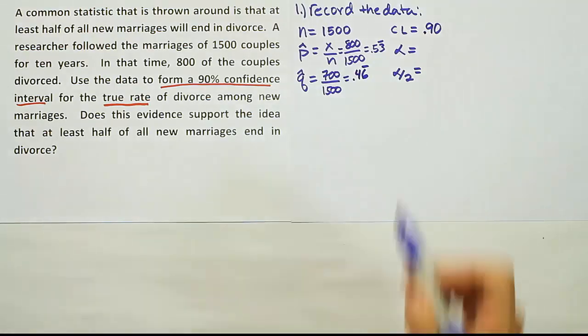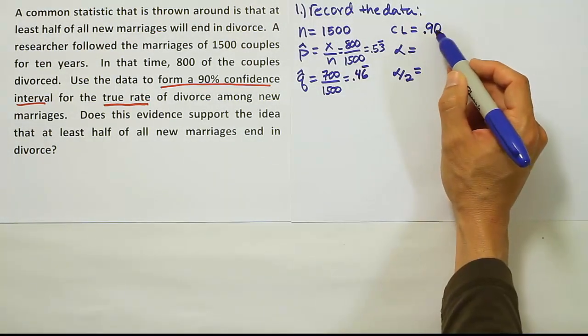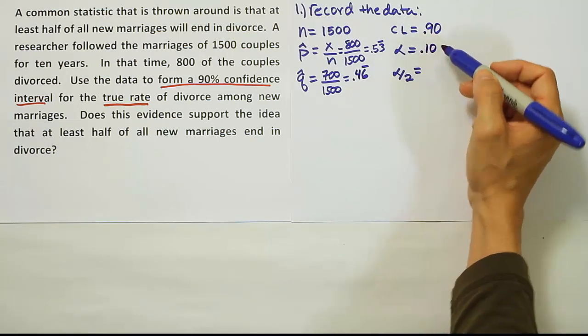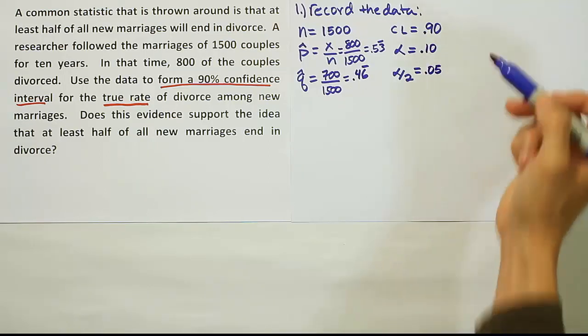From there, we can get alpha by the fact that the confidence level is 90%. Alpha must be 100% minus 90% or 10%. These two have to add up to 100. And then we take half of that alpha to get alpha divided by 2, so 0.05.